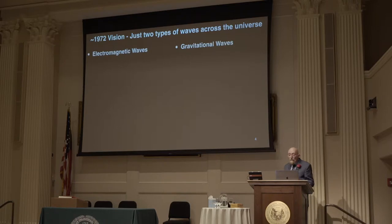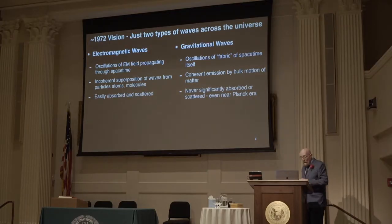By 1972, I and my theorist colleagues at Caltech and elsewhere had begun to develop a vision for what we might do with gravitational waves if they could be detected. The key point is that there are only two types of waves that can propagate across the universe bringing us information about what's very far away: electromagnetic waves, which Galileo used to create modern astronomy by pointing his telescope to the sky and discovering the four moons of Jupiter, and gravitational waves, which LIGO has done the same thing — creating modern gravitational astronomy by discovering colliding black holes.